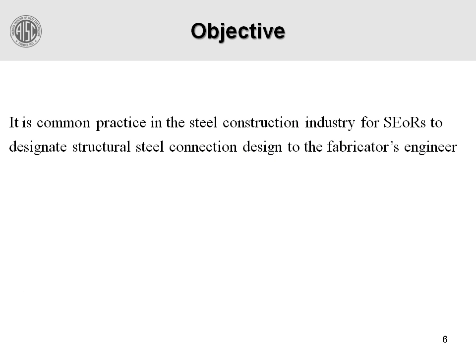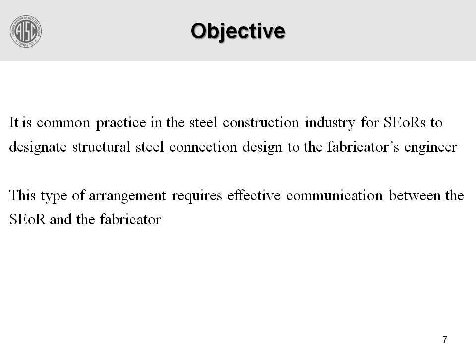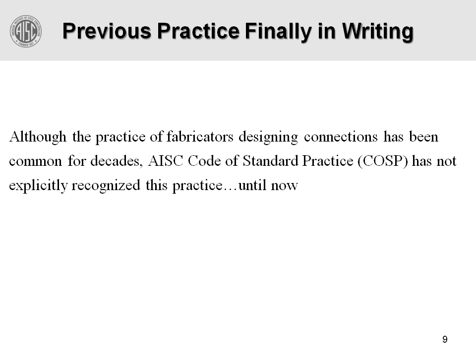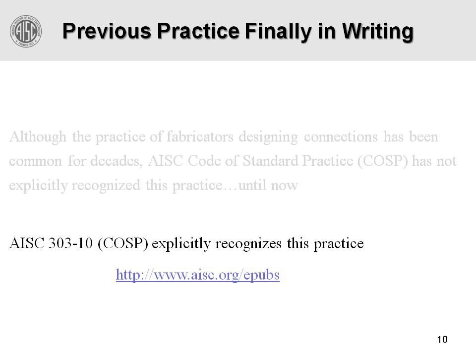The objectives here are: it's a common practice in the steel construction industry for the engineer of record to designate structural steel connection design to the fabricator's engineer. This type of arrangement requires effective communication between the two. The objective of this discussion is to illuminate the type of information that needs to be communicated between the engineer and the designer, and effective ways of doing so. Although this practice has been common for decades, the 2010 version of AISC 303, the Code of Standard Practice, explicitly recognizes it. A link is provided to download the standard practice.